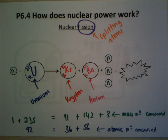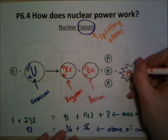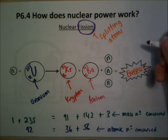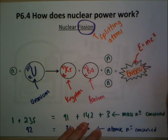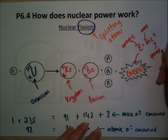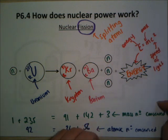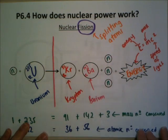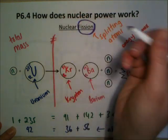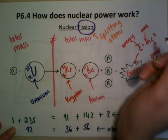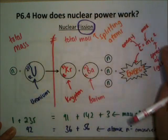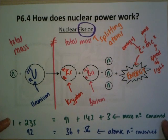Fission doesn't just produce radioactive materials — it also produces energy. This is to do with E = mc², where E is energy, m is mass, and c is the speed of light — Einstein's famous equation. The total mass of the neutron plus the uranium is not equal to the total mass of the krypton, the barium, and the three neutrons — it's a little bit bigger on the reactant side. That extra mass is converted into energy via E = mc², and it's the difference in mass that gives us this release of energy.